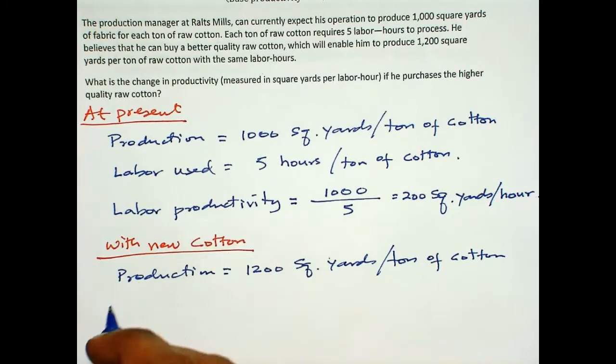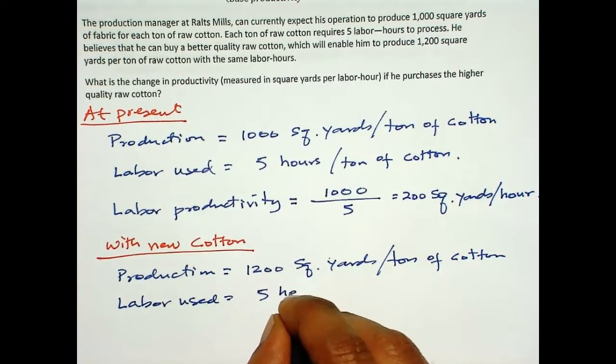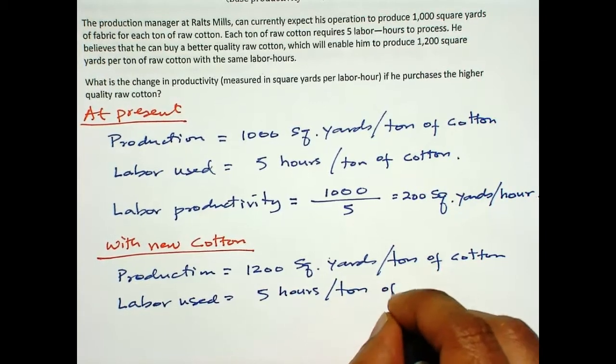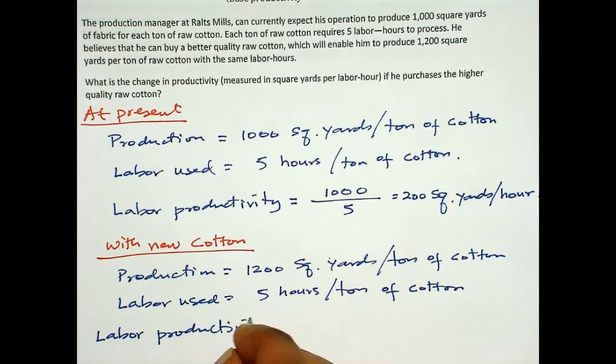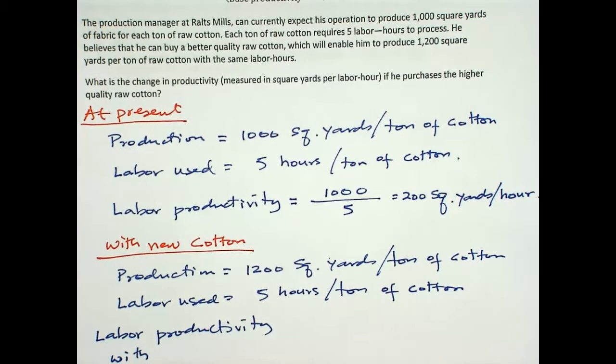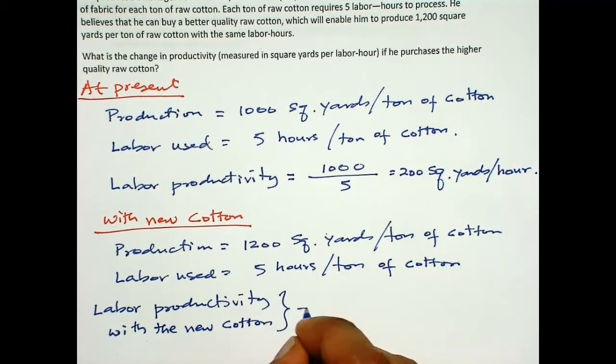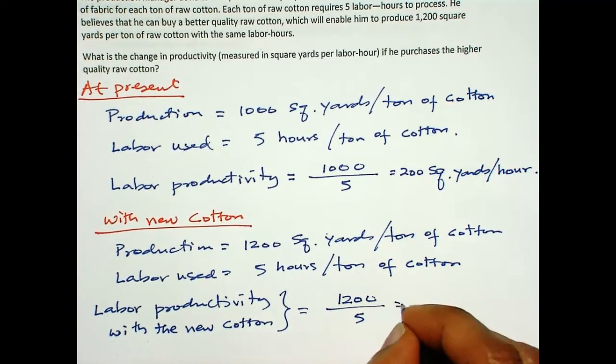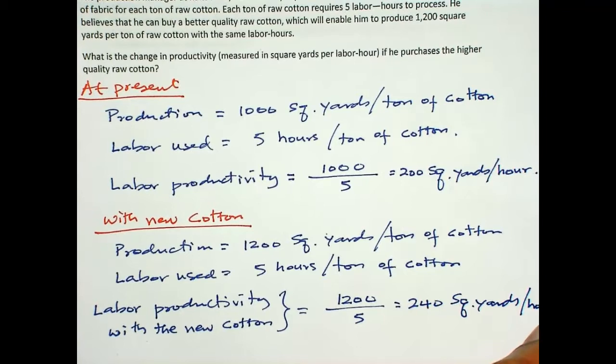Labor used is the same, 5 hours per ton of cotton. Now, labor productivity with the new cotton: the output is 1200 divided by 5, which is 240 square yards per hour.